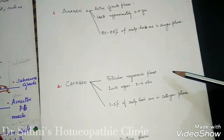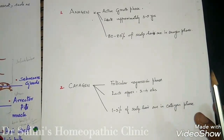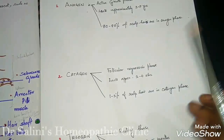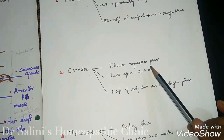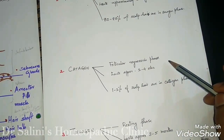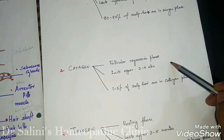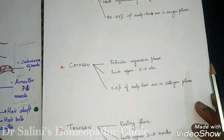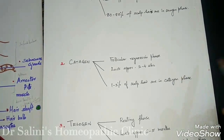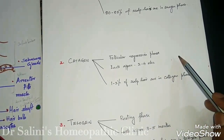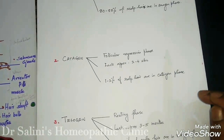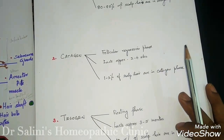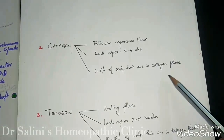In the catagen phase, there is no known reason or cause yet for why this phase happens — only that regression occurs at the follicular area. This lasts approximately two to four weeks, and at any given time, one to two percent of scalp hair are in the catagen phase.